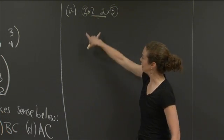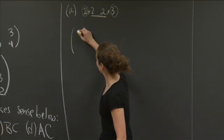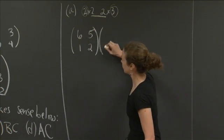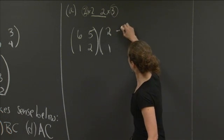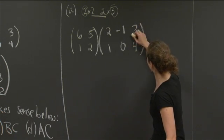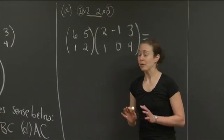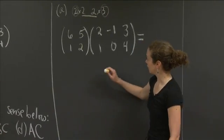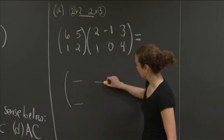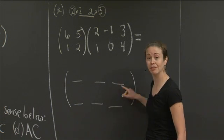So I'm going to rewrite A and B here so that I don't have to keep walking back and forth. And then we'll do the multiplication. So I have (6, 5, 1, 2) times (2, -1, 3, 1, 0, 4). OK. So I want to perform this multiplication. Now, remember that when you are looking for a value in your resulting matrix, which I know is 2 by 3, so I can even make a little space for myself. I know it's 2 by 3, so I know I'm going to have to fill in these spots.